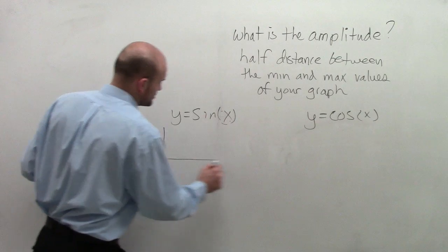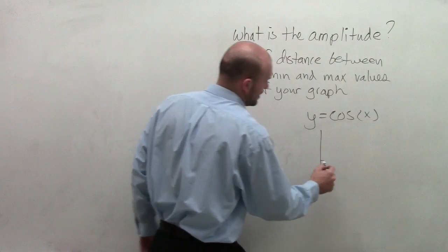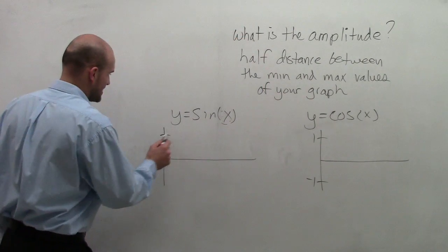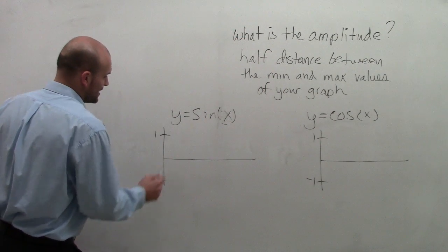Let's go and graph the sine and the cosine function, and we can go and determine what the amplitude is going to be. So the sine function, just to graph one initial period of the sine and cosine, well, we know from graphing, learning how to graph the sine and cosine, that the graphs go up to 1 and go down to negative 1.